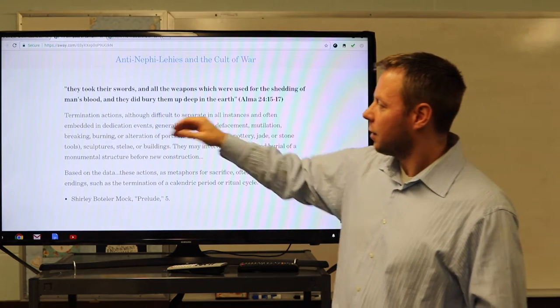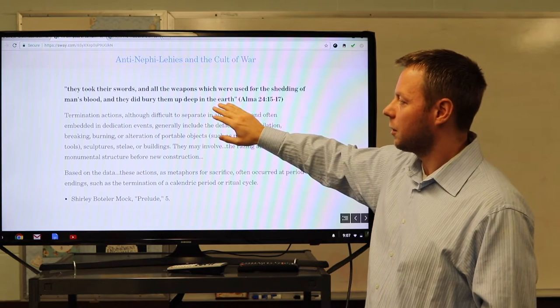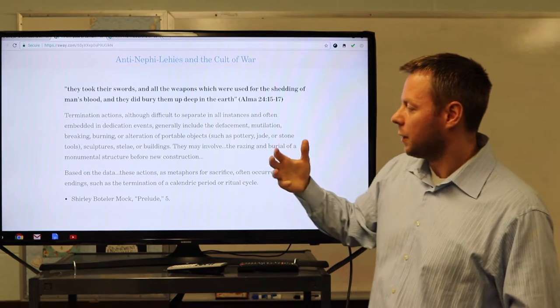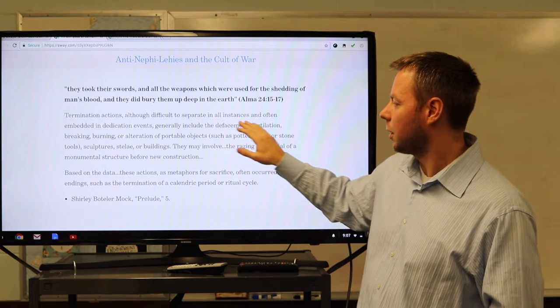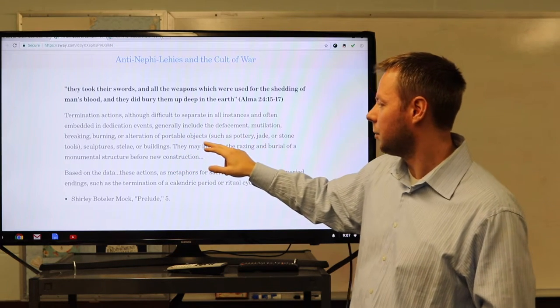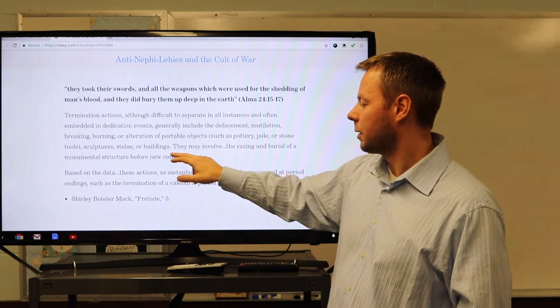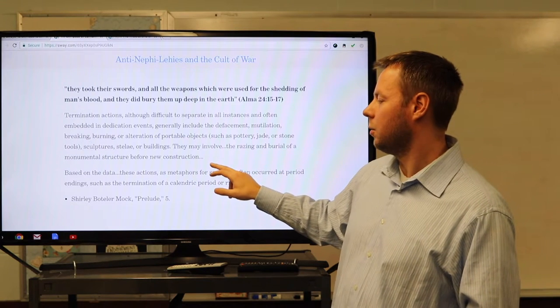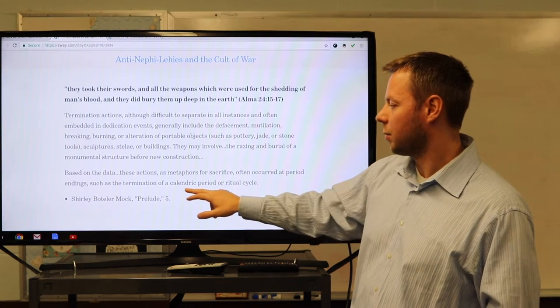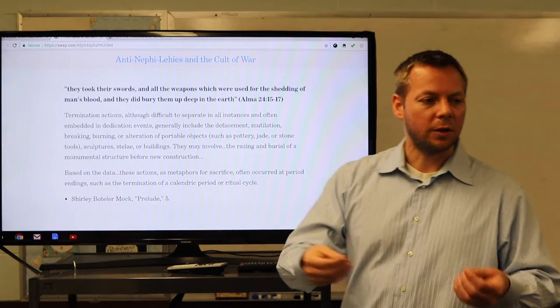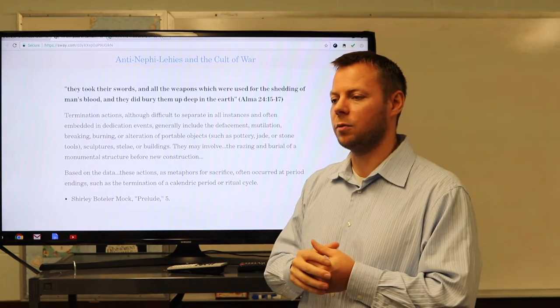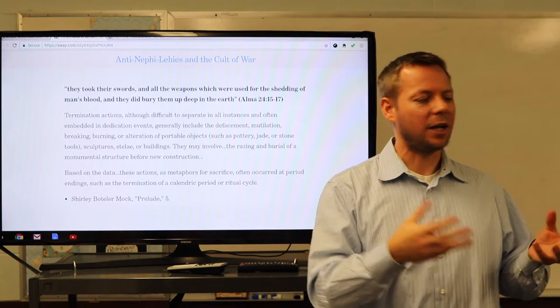So, why did they then take their swords, all the weapons which they were used for the shedding of man's blood, and they buried them deep in the earth? Oftentimes, in what are called terminal actions, there would be this burial. So, terminal actions, although difficult to separate in all instances and often embedded in dedication events, generally include the defacement, mutilation, and breaking, burning, or alteration of portable objects. So, this is pottery, jade, or stone tools. Sculptures, stelae, or buildings. They may involve the razing and burial of a monumental structure before a new construction. Based on the data, these actions as metaphors for sacrifice often occurred at period endings, such as termination of a calendric period or ritual cycle. So, he's entering a new oath, right? A new ritual cycle with his people. And as part of that, they have a ritualistic burying of those weapons.